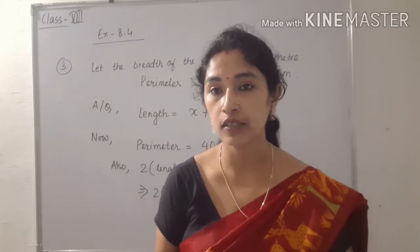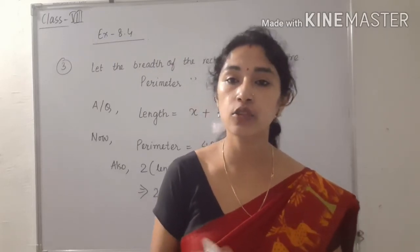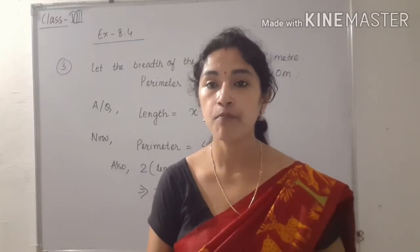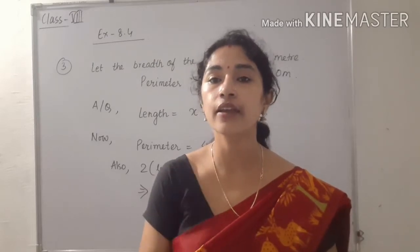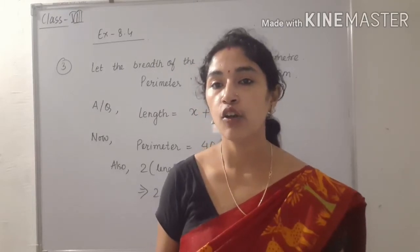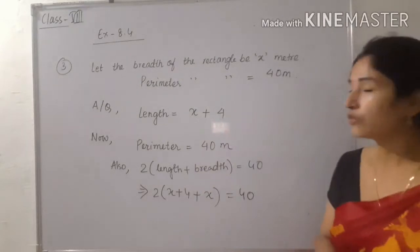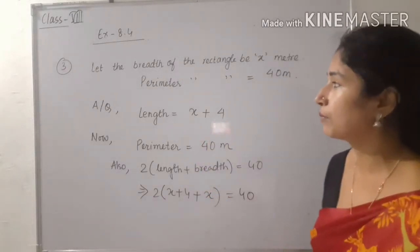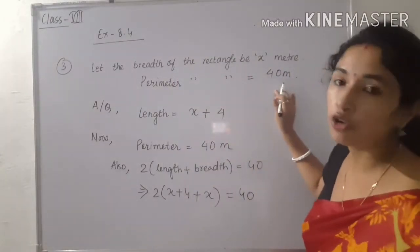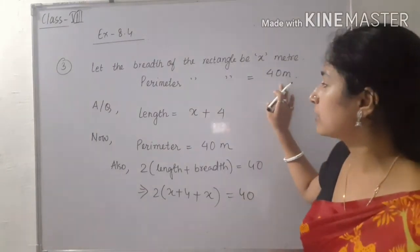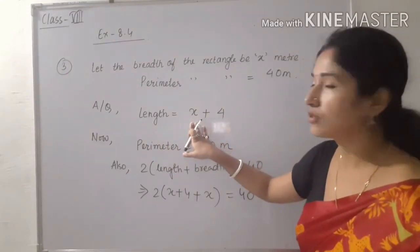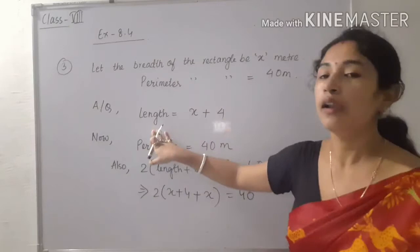If the breadth is 5 cm, then length would be 9 cm, since it is 4 more than its breadth. So if we take the breadth as x metres, then the length will be x plus 4. Breadth of the rectangle is taken as x metres, and the perimeter is given as 40 metres. According to the question, length equals x plus 4. Perimeter equals 2 into (length plus breadth), so we substitute.